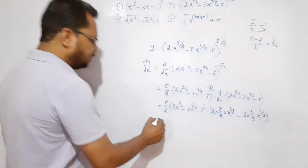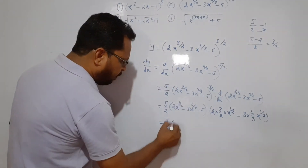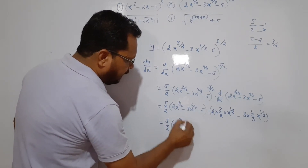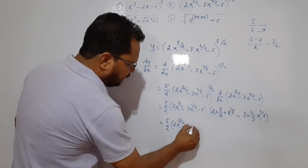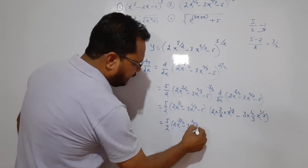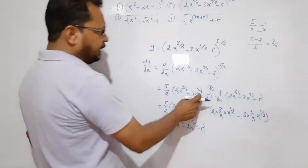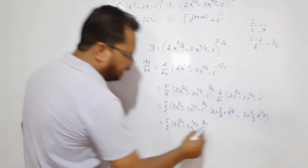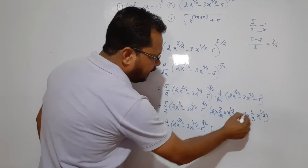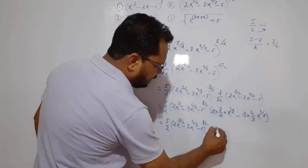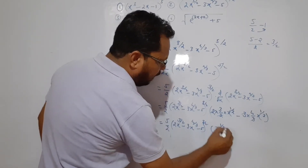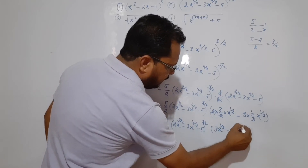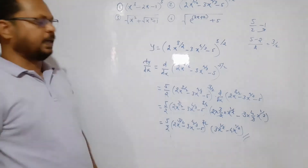Continuing the inner derivative: d/dx of (2x^(3/2) - 3x^(4/3) - 5) gives terms involving x^(1/2) and x^(1/3). Differentiating x^(4/3) gives (4/3)x^(1/3). This is your final answer for example 2.